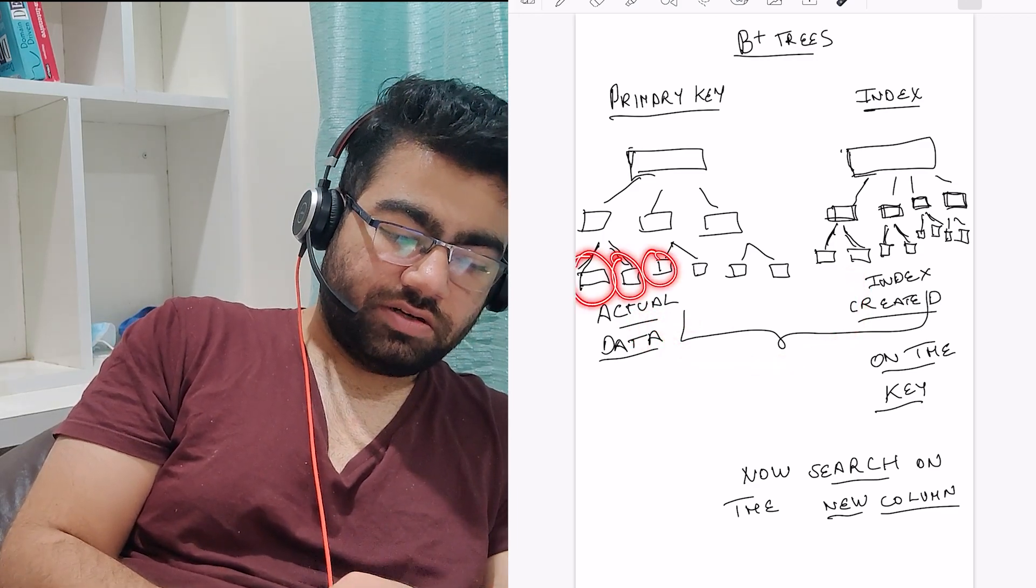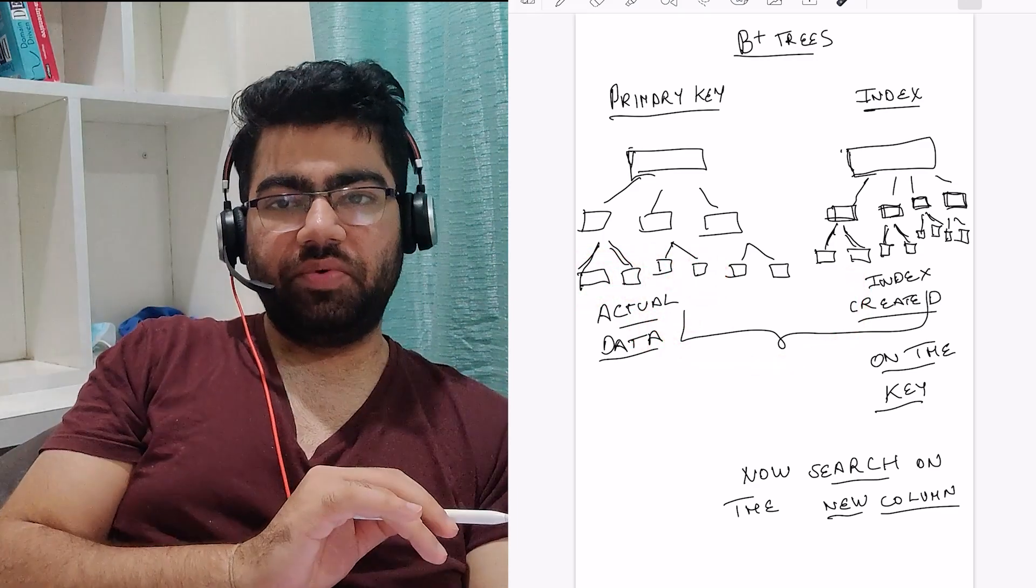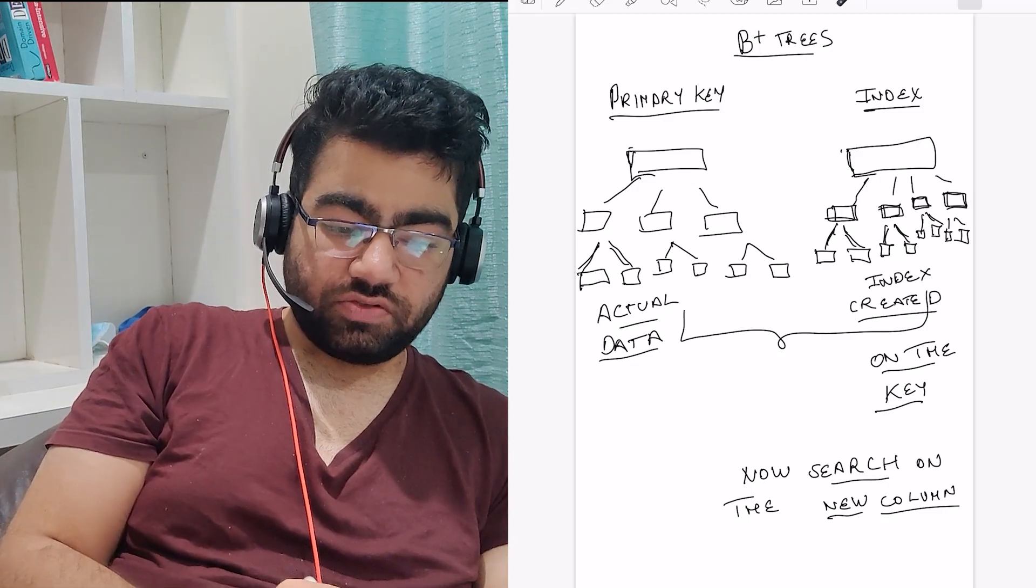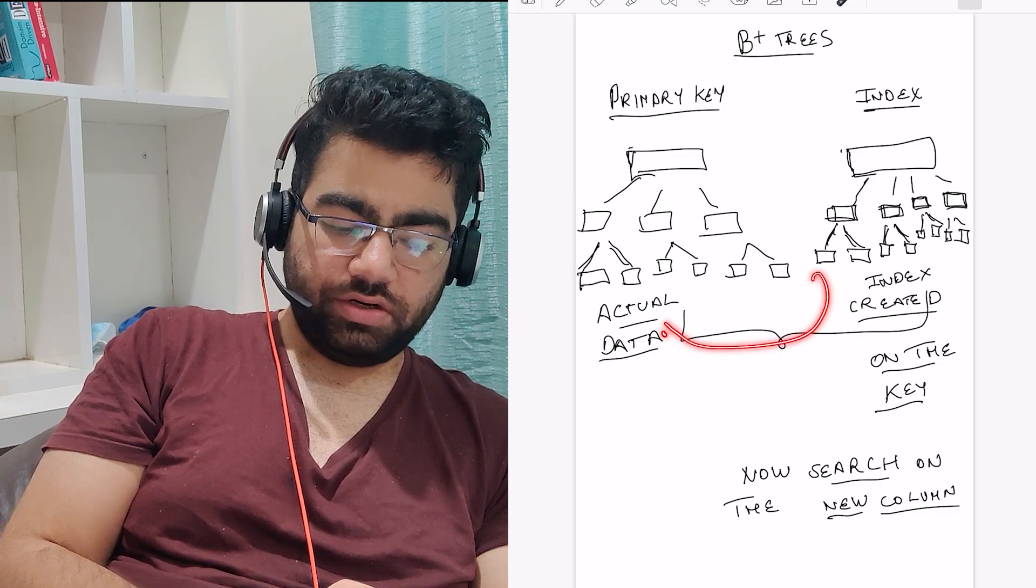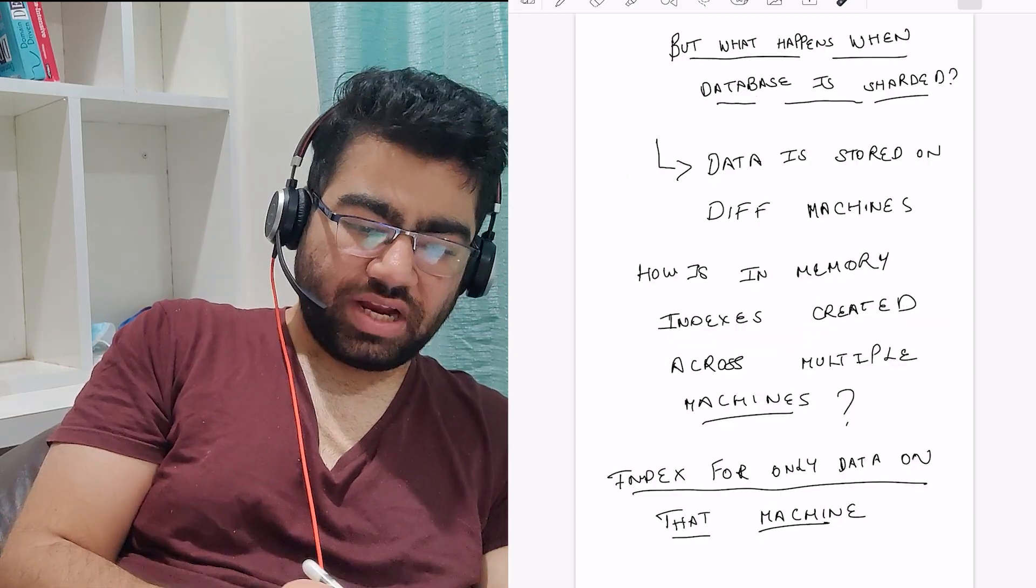The final key-value pair here - the key would be your index column which you have created, and the value would actually point to the location in the actual database B+ tree. This would not again make a copy of the data, it would just store a pointer to the data which is stored.